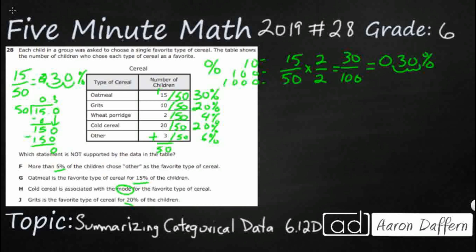More than 5% of the children chose other. That is correct. They chose 6%. But remember, we're looking for the one that's not it. Oatmeal is the favorite type of cereal for 15%. Oatmeal, 15%. You know what? I don't think that's it. This 15 is the raw number, but it's not the percentage.